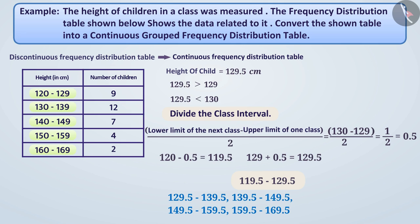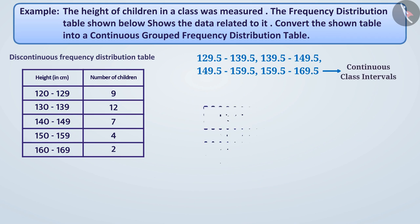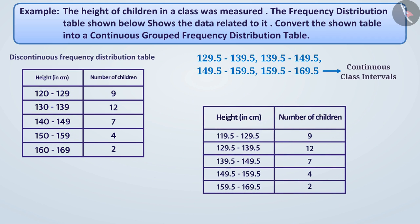Can you tell whether these class intervals are continuous or discontinuous? These are absolutely continuous class intervals. Now, we can organize these groups in this way. Now, this table is a continuous frequency distribution table.